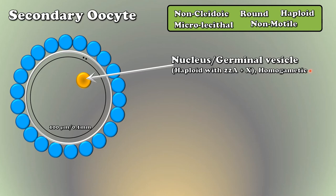Here, the nucleus is called pronucleus or germinal vesicle. It is present towards one end of the cell. That end is called animal pole.